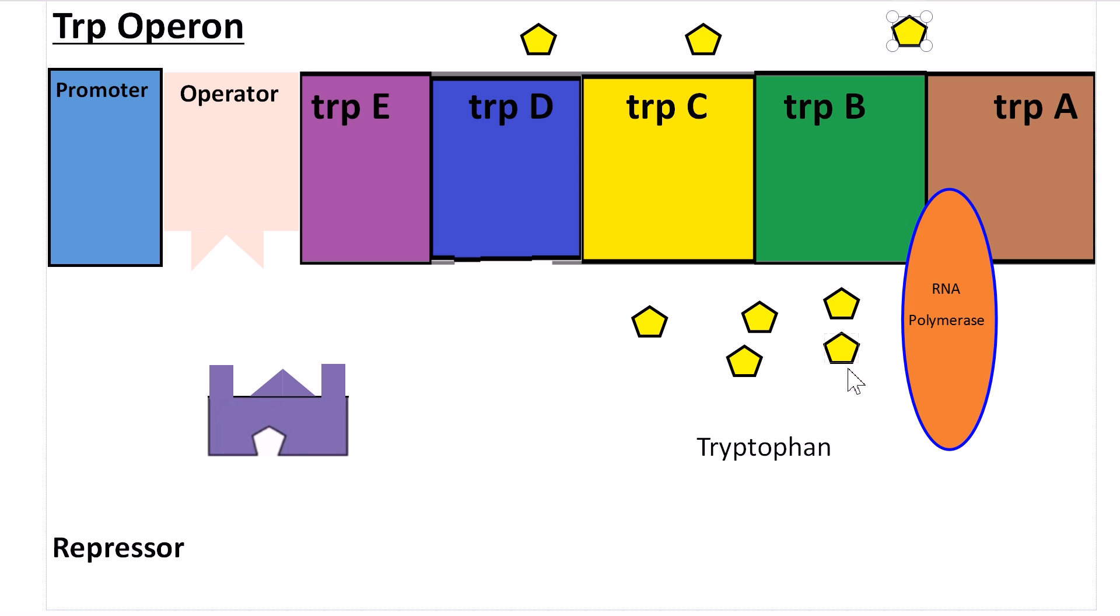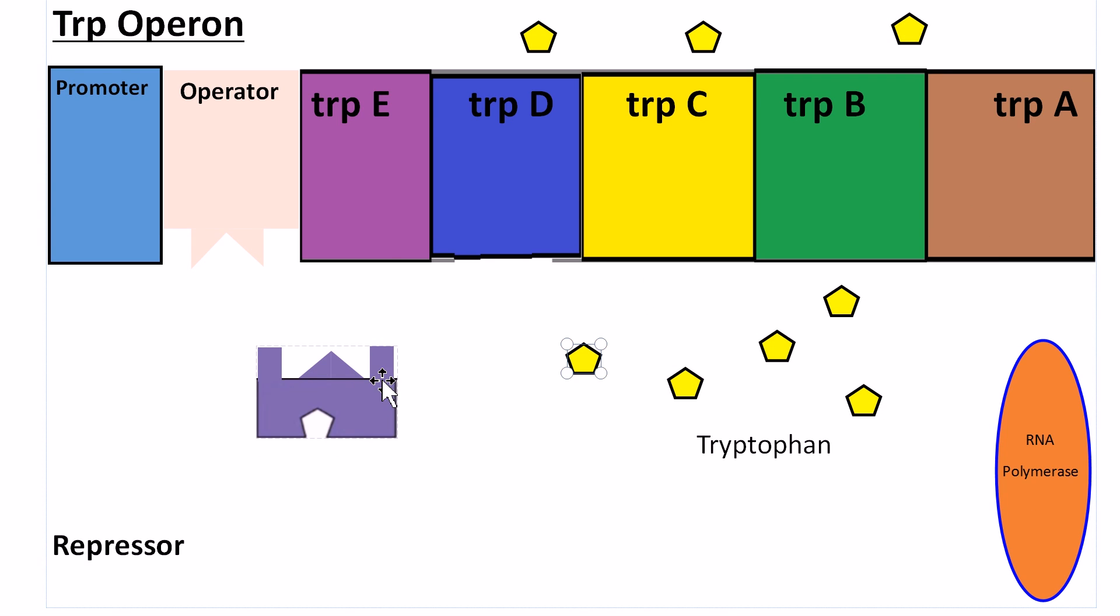So now we have more tryptophan in the cell, and our problem is solved. We can go back to the repressor being in its active state, with tryptophan attached, and the repressor then binding to the operator.